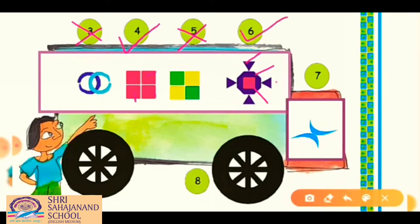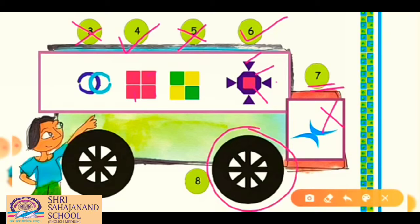For the seventh picture, in one fourth turn it does not look the same, and in half turn it also does not look the same — so put a cross. For the eighth picture, it is a circle or wheel. In one fourth turn it definitely looks the same — put a tick. In half turn it also looks the same, so no cross here.